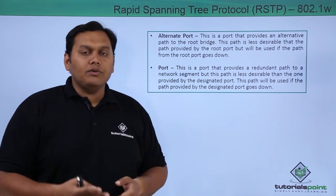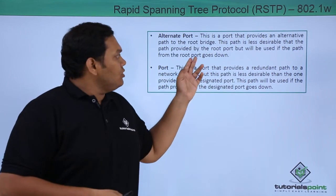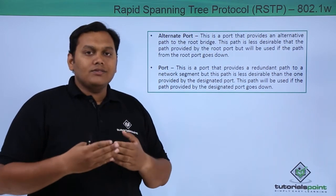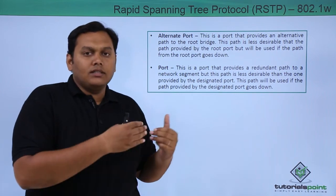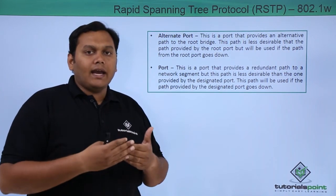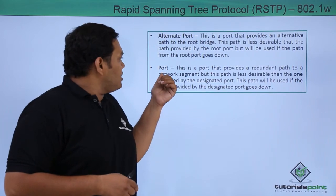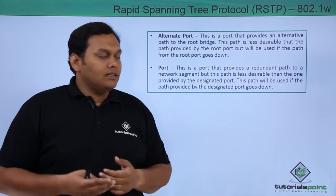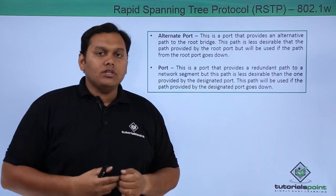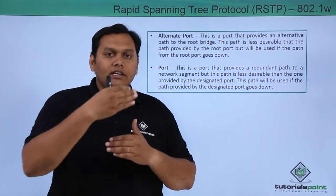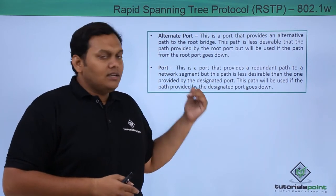In RSTP there are two new port roles: the alternative port and the backup port. The alternative port provides an alternative path to the root, which is less desirable than the root port, but it becomes active when the root port goes down. The backup port provides a redundant path to a network segment, but is less desirable than the designated port. When the designated port goes down, the backup port is used as the redundant path.